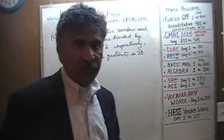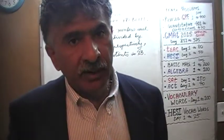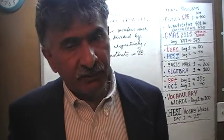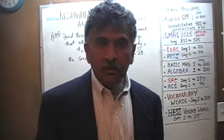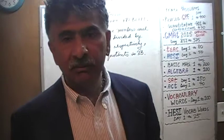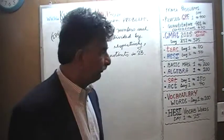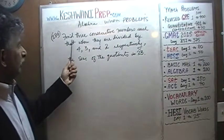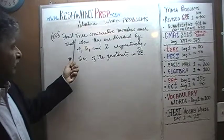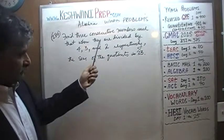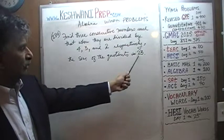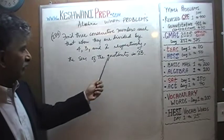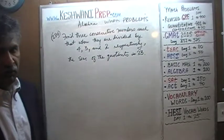Problem number 184 is a very simple, straightforward problem, and problem 185 is going to be the exact same scenario, same setup — just different numbers but the same type of problem. We are asked to find three consecutive numbers such that when they are divided by 4, 3, and 2 respectively, the sum of their quotients is 23.